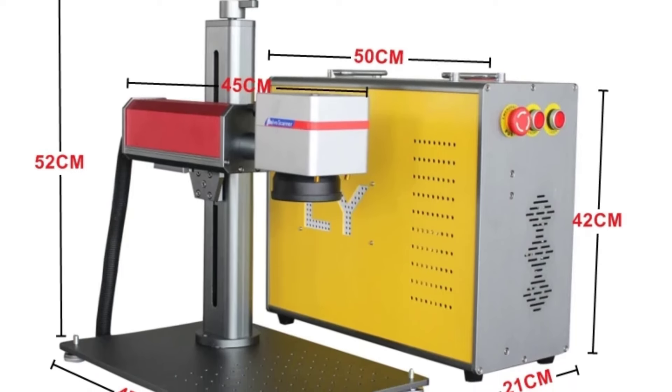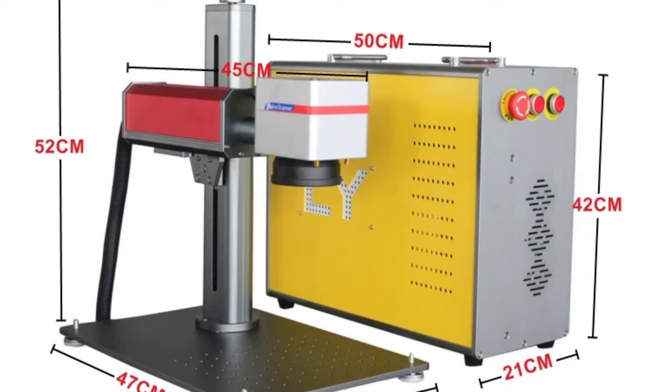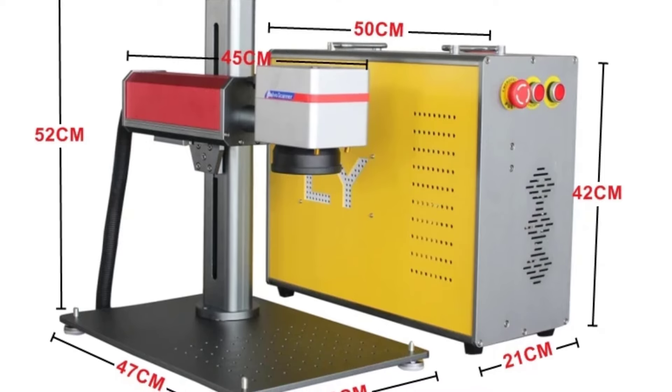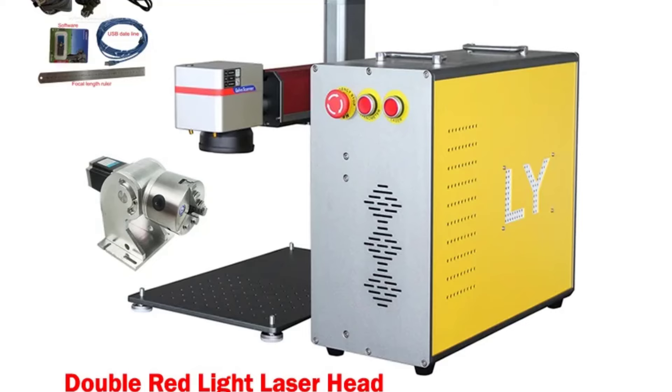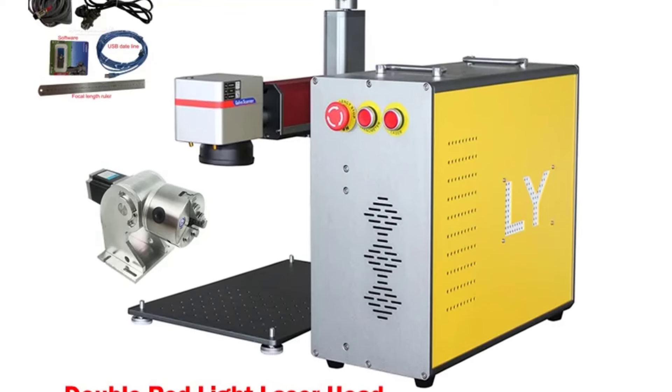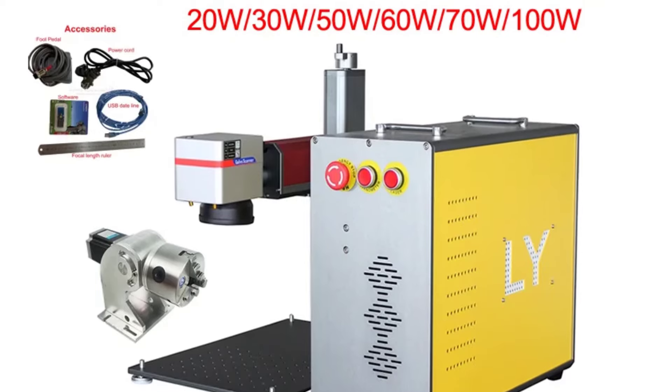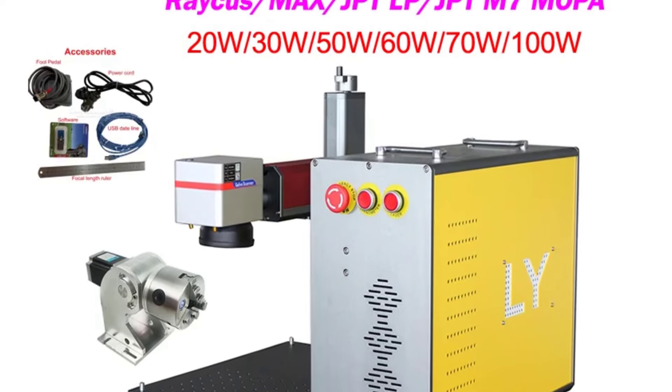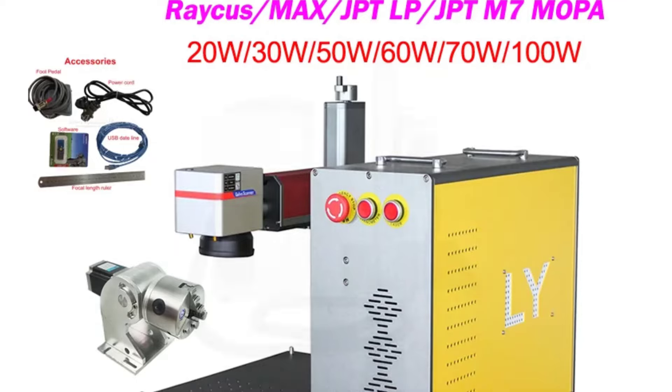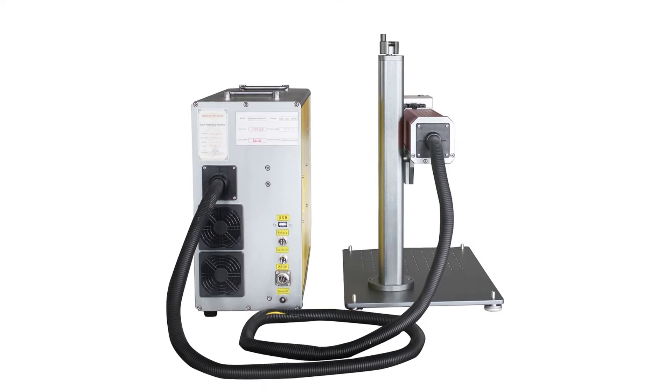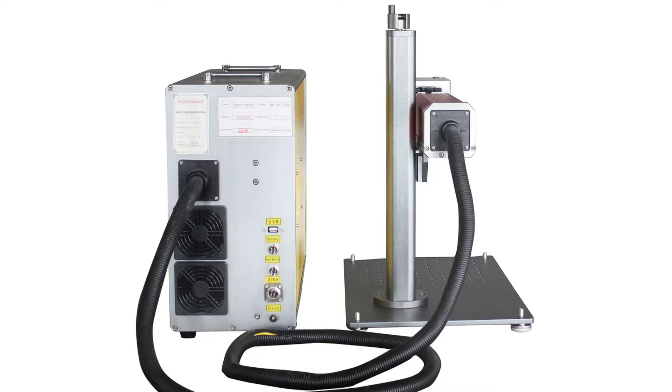Its air-cooled design ensures consistent performance, while the advanced EaseCAD software supports various file formats, making it incredibly user-friendly. Perfect for marking text, patterns, barcodes, and more, it delivers a marking speed of up to 4,000 millimeters per second with adjustable depth and unparalleled accuracy. It's a reliable choice for professionals looking to achieve high-quality results.